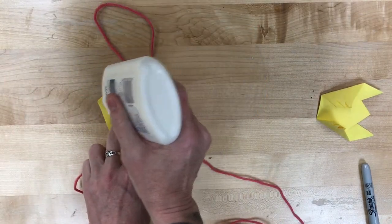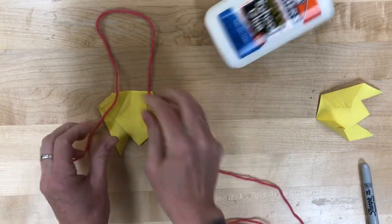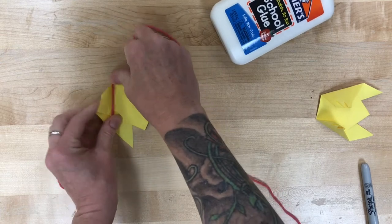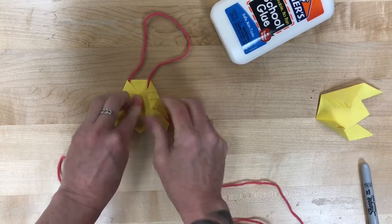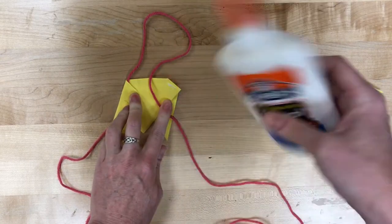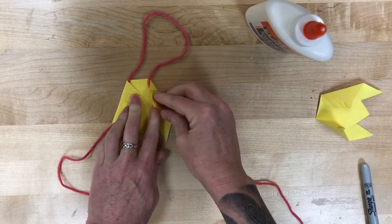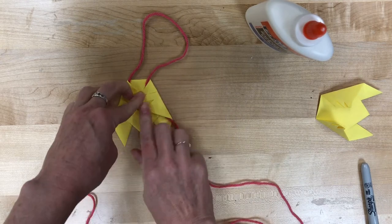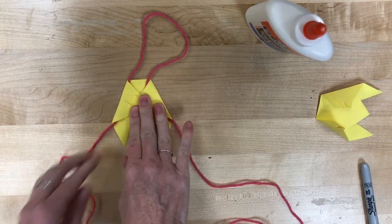And we are gonna glue the edges, not the whole thing, but just the edge to that center line. That way your string is going to be able to move freely, but it won't be able to come undone from your climber. So go ahead and hold that in place. We're gonna let it dry.